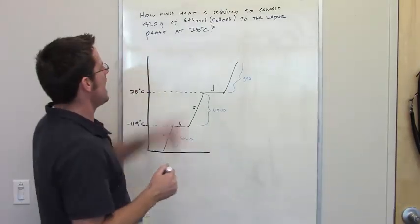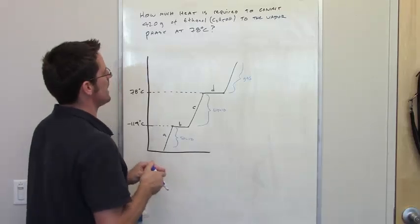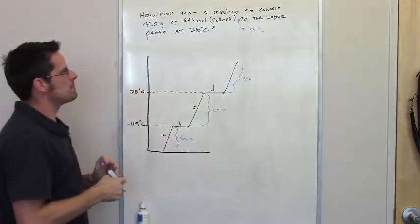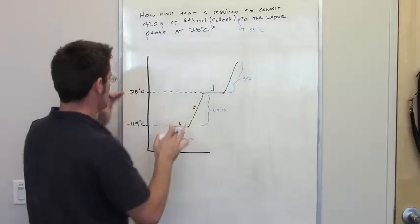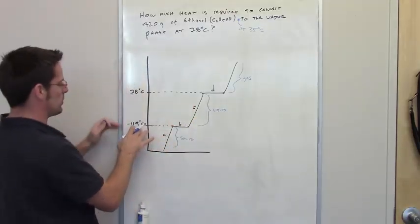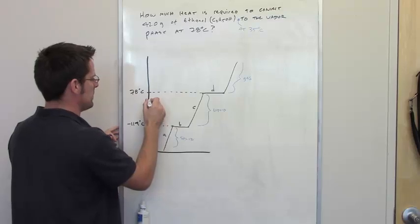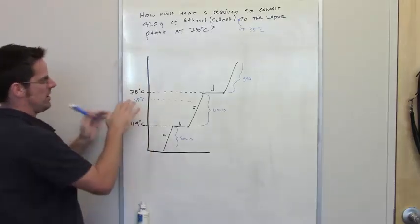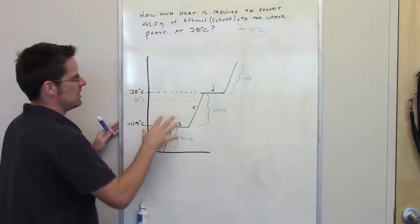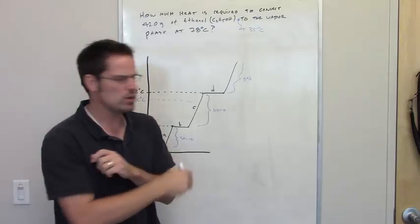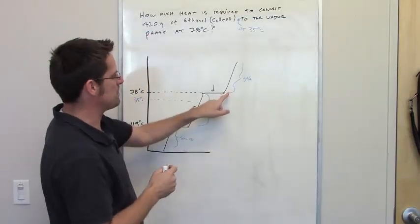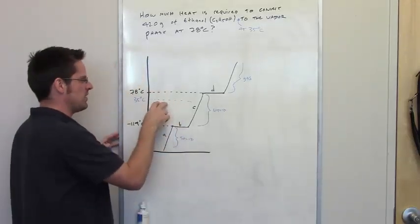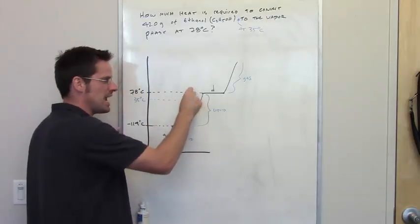This question asks us how much heat is required to convert 42 grams of ethanol at 35 degrees Celsius to the vapor phase at 78 degrees Celsius. Since 35°C is between negative 114°C and 78°C, ethanol at that temperature is going to be a liquid. So I have to take those 42 grams sitting at 35°C and warm them up to 78°C.